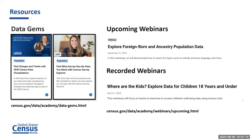As we mentioned in the beginning, we have a plethora of resources. Here are our upcoming webinars — we have Explore Foreign Born and Ancestry Population Data coming up September 21st. We also have recorded webinars, including one from April 27th, 2023: Where Are the Kids? Explore Data for Children 18 Years and Under. We also have our data gems — short five to ten minute how-to videos on various data tools and topics. You can get there at census.gov/data/academy/webinars/upcoming.